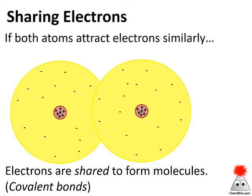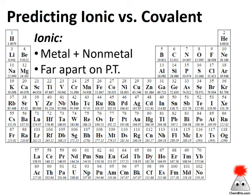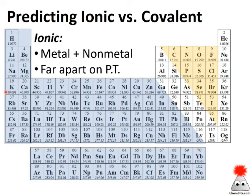How do we predict whether something is going to be more covalent or more ionic? The periodic table is really going to help us out here. For ionic compounds, we usually have a metal and a non-metal that are fairly far apart from each other on the periodic table. For example, potassium chloride: potassium has one extra electron it doesn't hold onto very strongly, while chlorine is one short of an octet and really wants to attract an electron. So potassium and chlorine interact with an electron transfer, giving us an ionic compound.